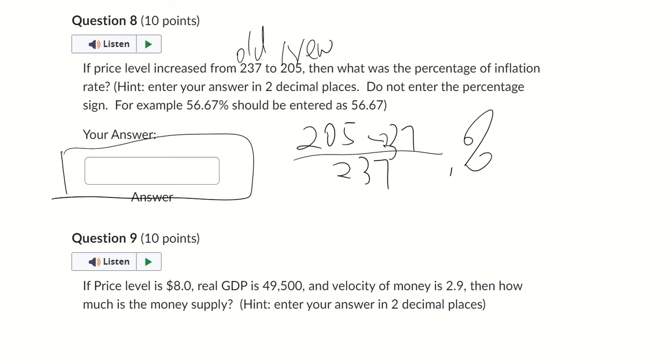So this is the formula in the chapter we have. So remember V times M equals P times Y. So just plug in the numbers here. Velocity of money is 2.9, price level is 8, real GDP is 49,500. So just got to solve for the missing variable.